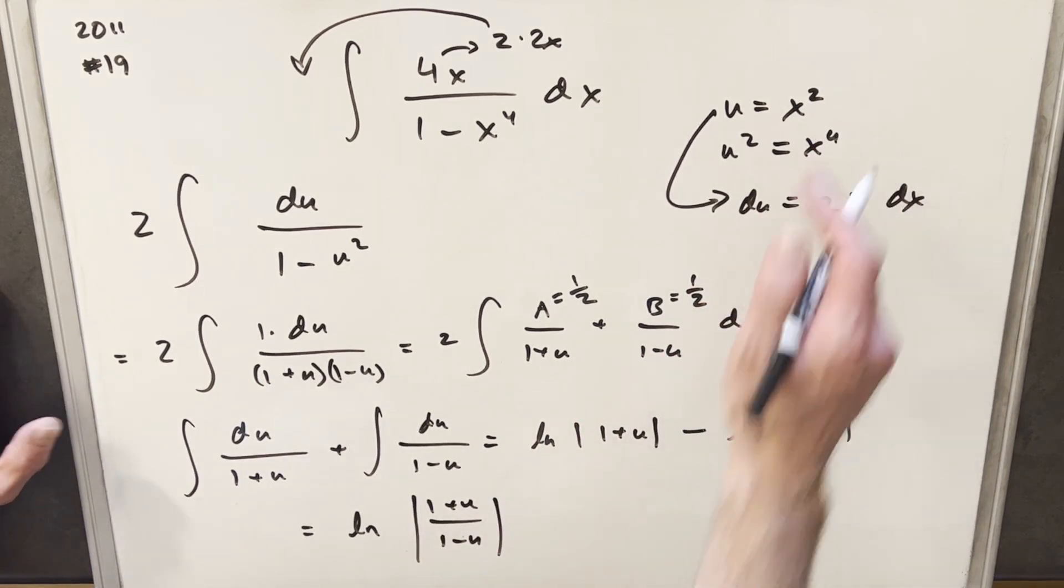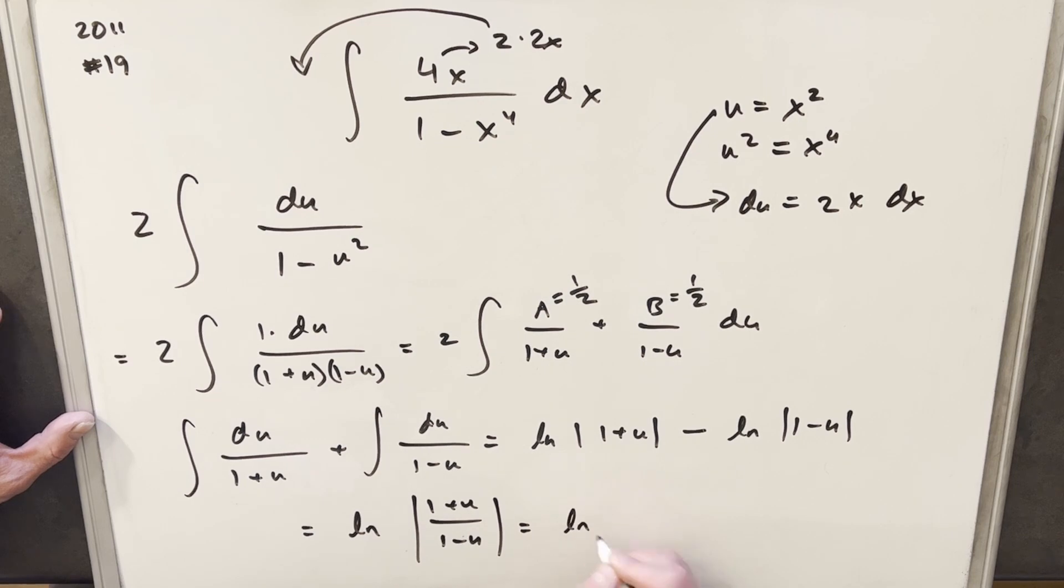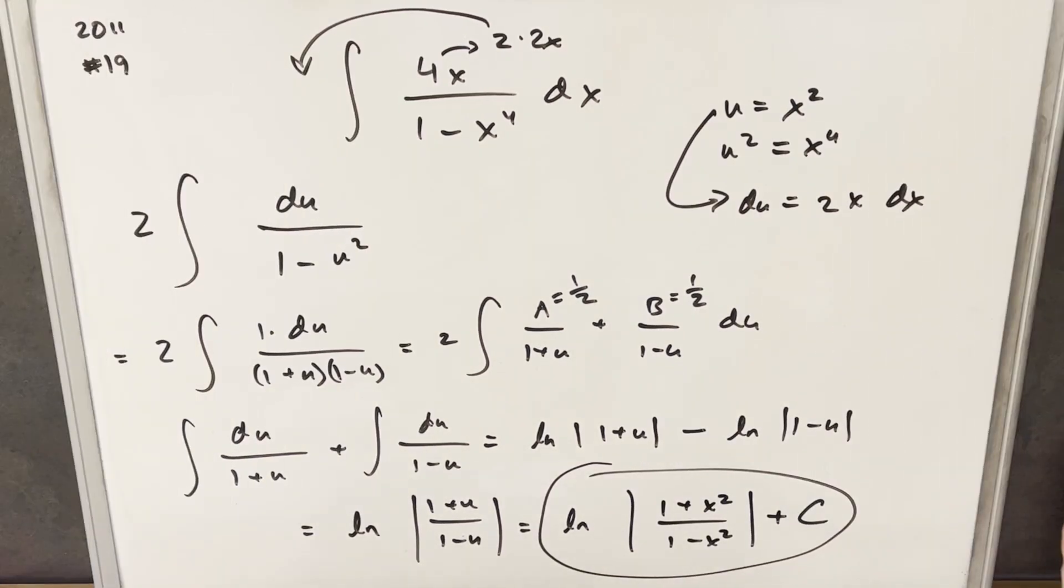Then we just need to back substitute our x squared to finish this off. So for our final solution, we're going to have natural log 1 plus x squared over 1 minus x squared plus c. That's it. Quick problem today. Thanks, everyone, for watching. Please subscribe. Have a good day.